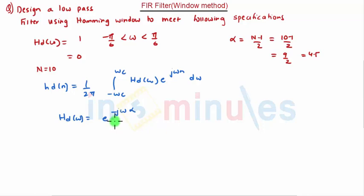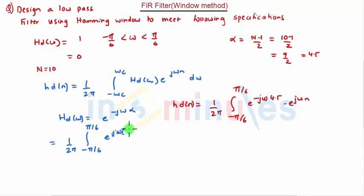Alpha is 4.5 and omega is ranging from minus pi by 6 to plus pi by 6. So, e raised to minus j omega alpha, that would be HD of n is given by 1 by 2 pi, integration from minus pi by 6 to plus pi by 6, e raised to minus j omega 4.5 into e raised to j omega n. Now, we will take the exponential terms common. We get 1 by 2 pi, integration minus pi by 6 to plus pi by 6, e raised to j omega n minus 4.5 d omega.